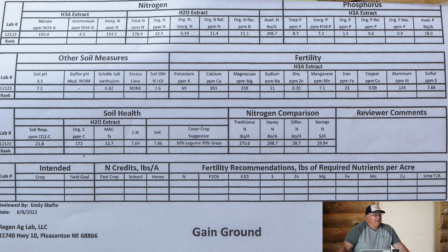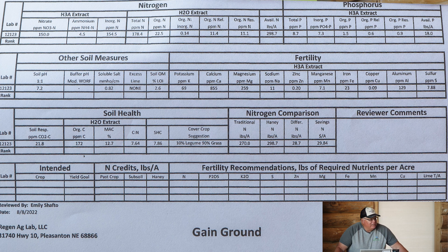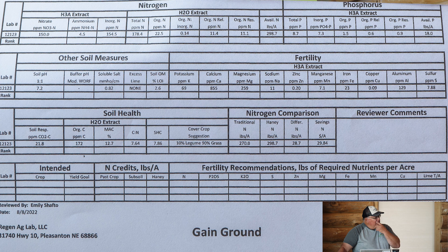The nutrients haven't all leached away the last two years because we've just been that dry. Last year we had 5.6 total inches of precip. The year before was 6.2. This year we haven't hit six yet — we're at 5.9.